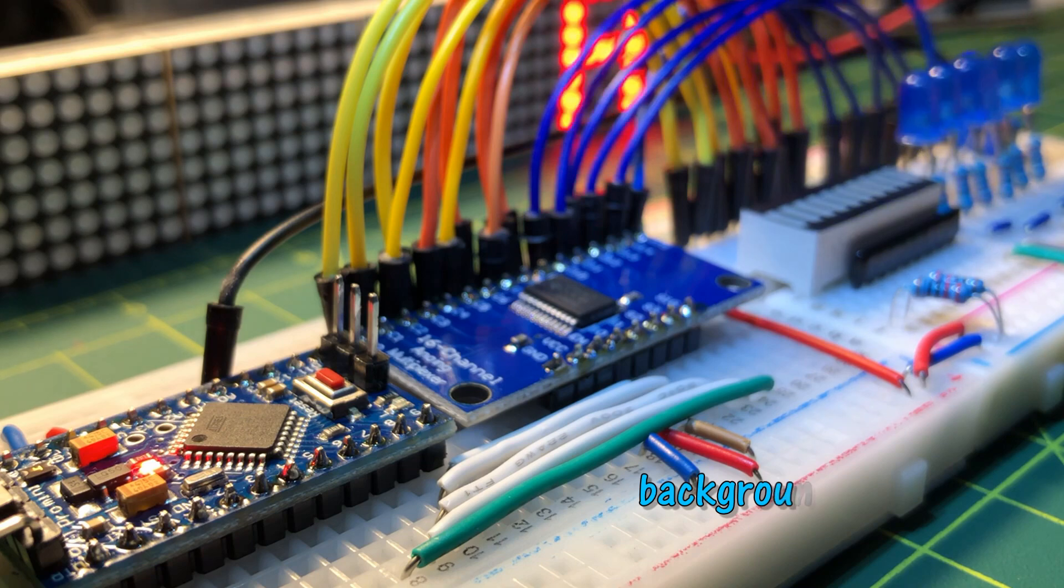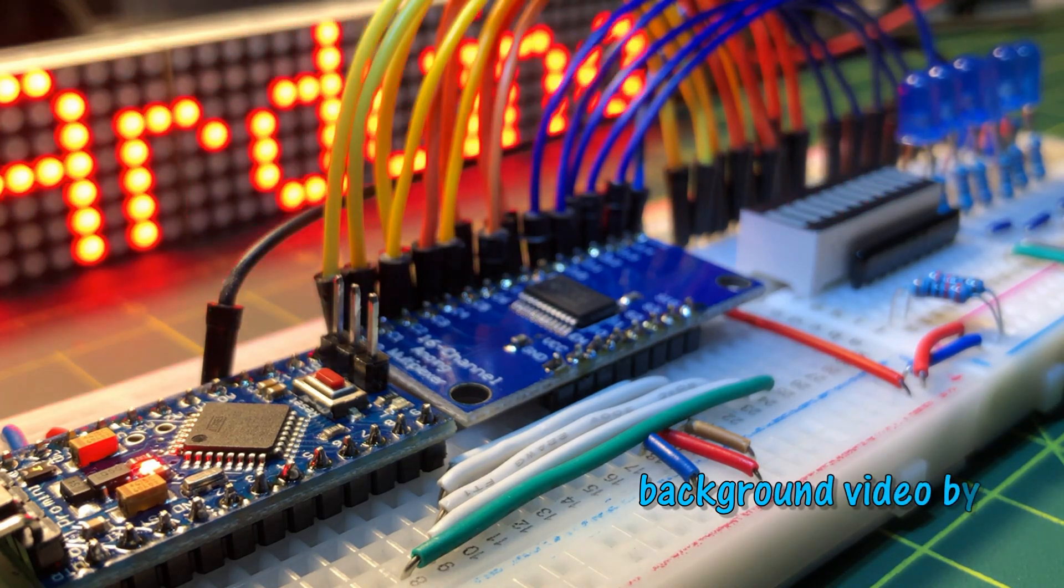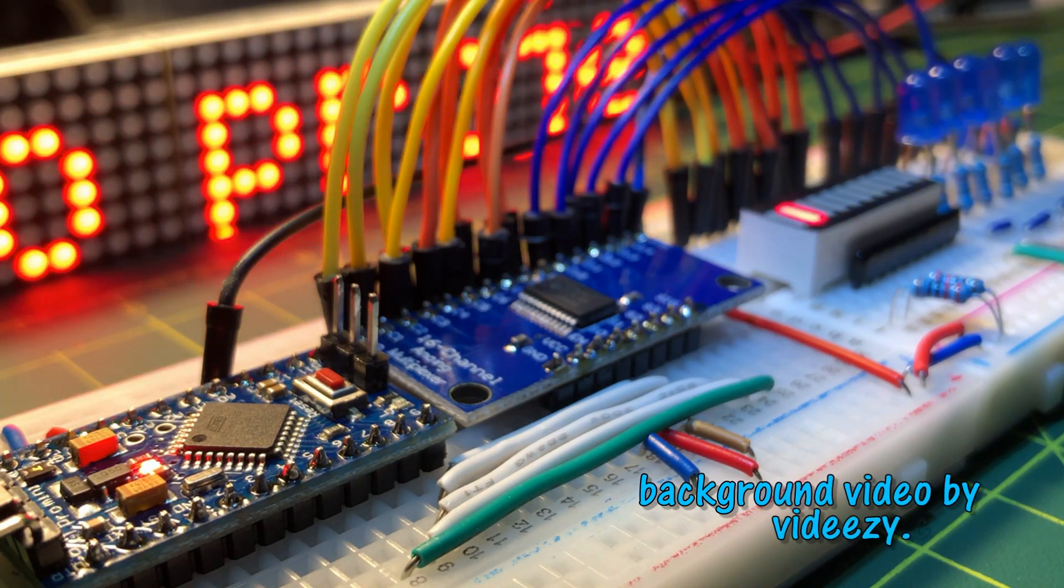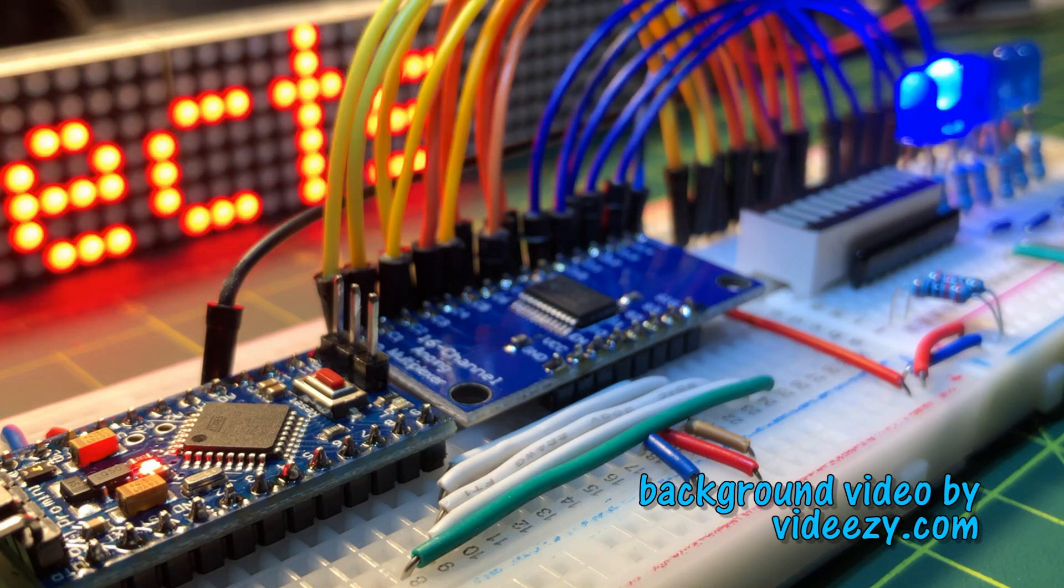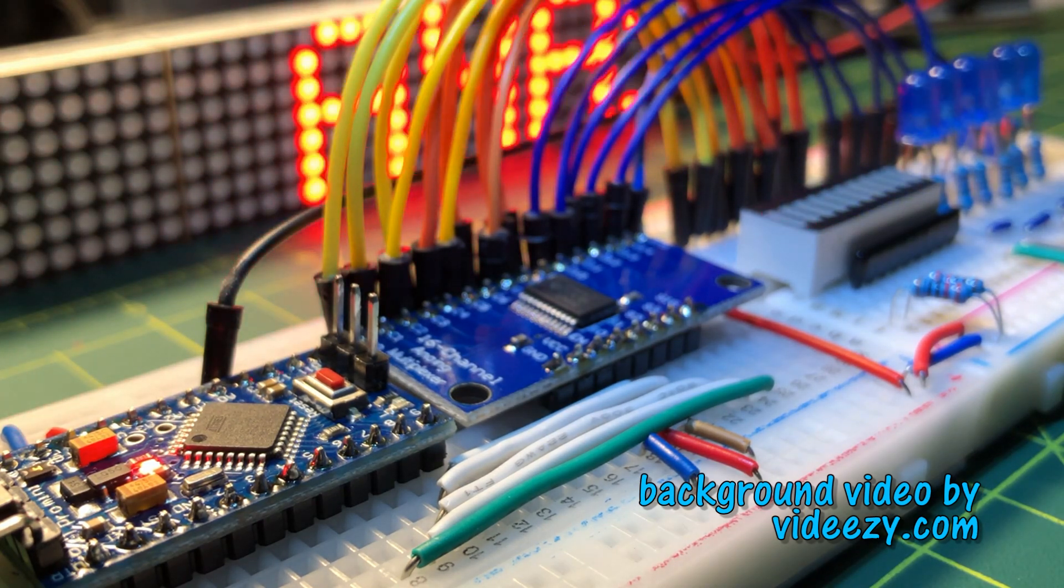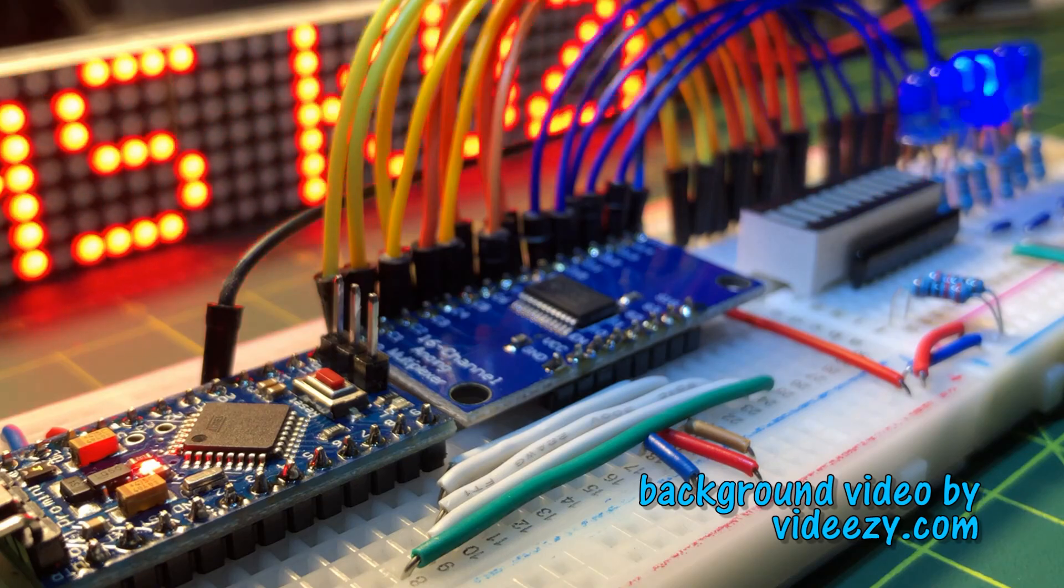In my next video I will program 16 channel analog multiplexer demultiplexer 74HC4067 using assembly language. Thank you for watching.